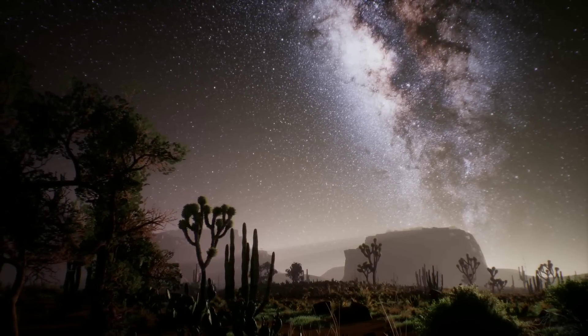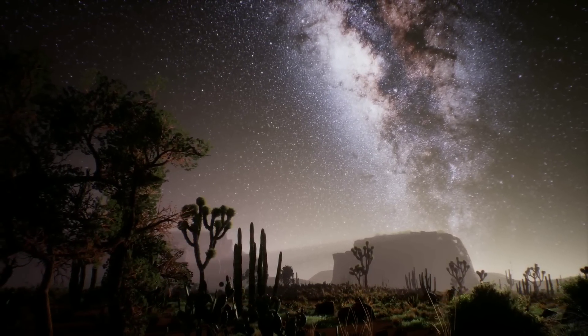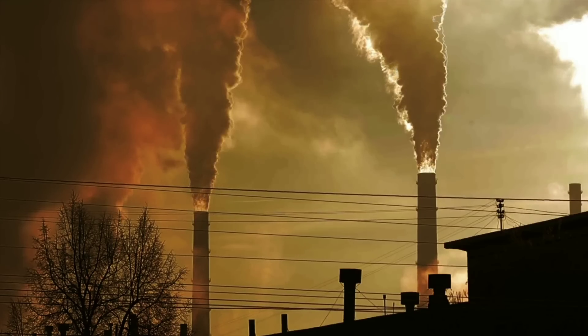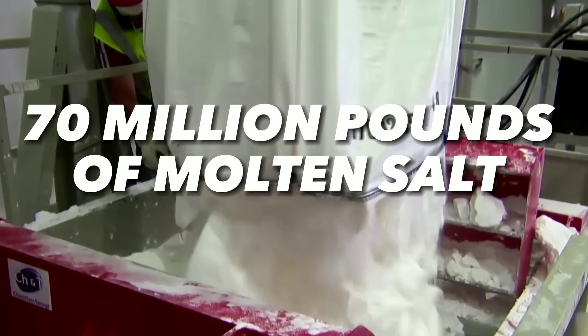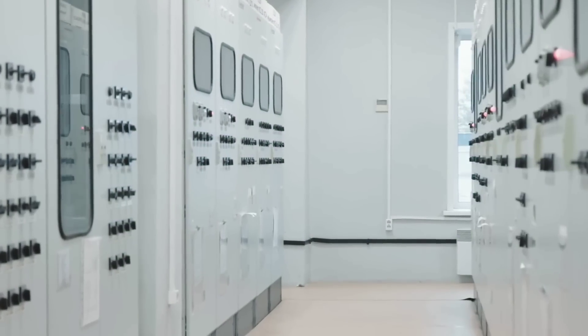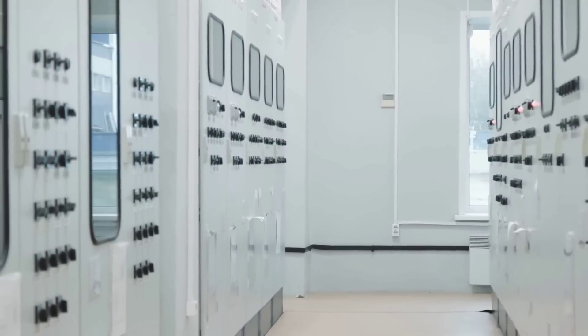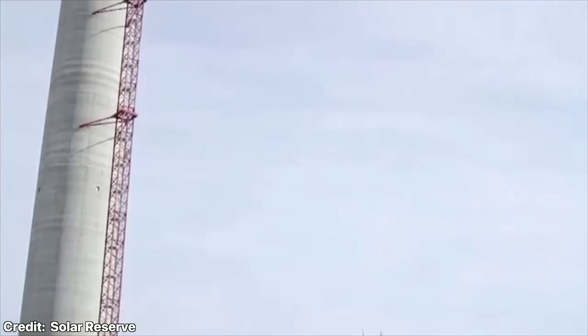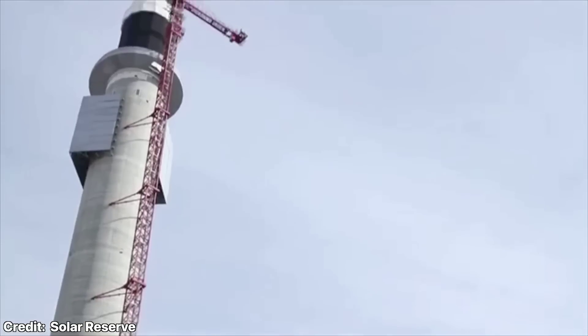The plant did not need any backup fossil fuels, such as natural gas, to run. The plant had 70 million pounds of molten salt, which took two months to melt. Once melted, the salt stayed liquid for the life of the plant and was reheated by cycling through the receiver.